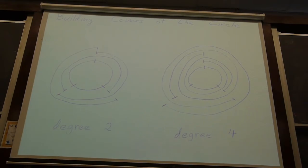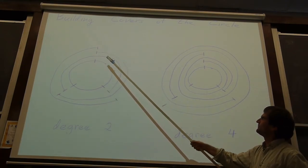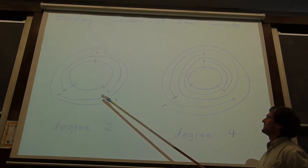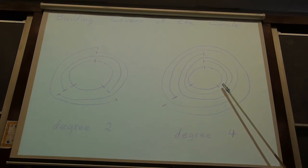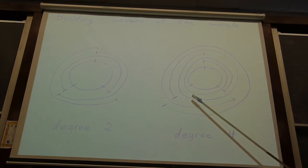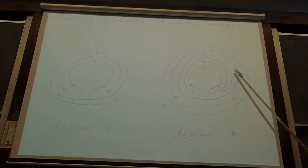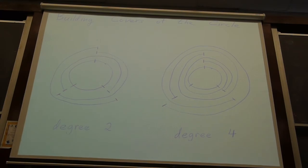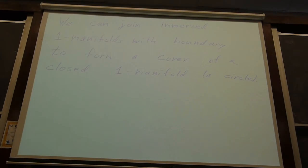Before we build covers of a surface, let me briefly talk about building covers of a circle. Here I have segments, and I join them together to form a degree-two cover of the circle. These segments are not embedded — they're just immersed because they go more than once around. They form a degree-four cover when joined together.